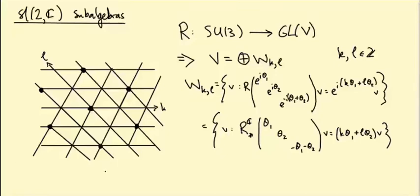We've now defined the weight space decomposition for an SU(3) representation. If we have a representation of SU(3) on a complex vector space V, then V splits as a direct sum of pieces W_KL, where W_KL is a simultaneous eigenspace for the set of matrices R of the diagonal matrix e^{iθ1}, e^{iθ2}, e^{-i(θ1+θ2)}, as θ1 and θ2 vary.